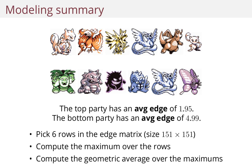And the way we evaluate a party is we construct this matrix of every edge — every pair of Pokemon — a 151 times 151 matrix. We pick six rows — six Pokemon — and compute the maximum over these rows to produce a new row.